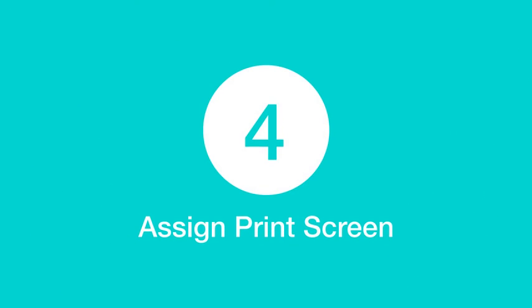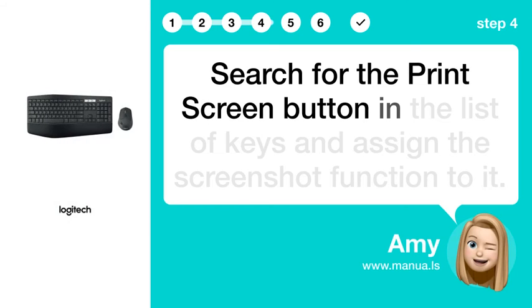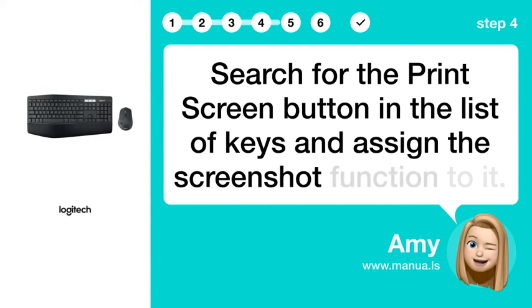Step 4: Assign Print Screen. Search for the Print Screen button in the list of keys and assign the screenshot function to it.